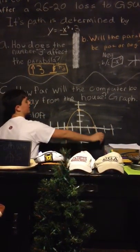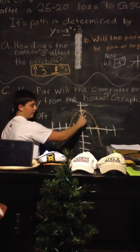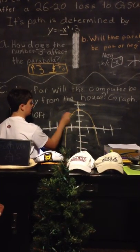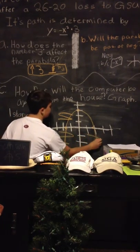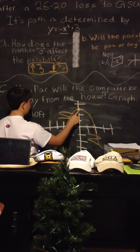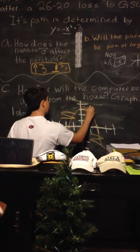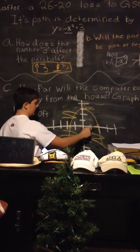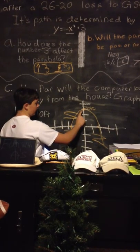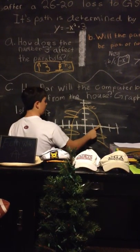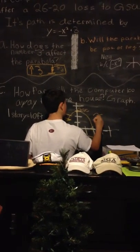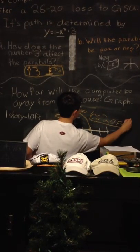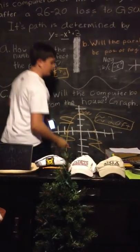Since he's throwing the computer out this way, of the house, you're not going to have to use these portions of the graph, so you just mark those out. You can see that he threw it from up here, which is about 30 feet. According to our key, one story equals 10 feet. That means if he throws the computer from 30 feet, it's going to land at about 20 feet away. So that's your answer — that's how far he throws the computer.